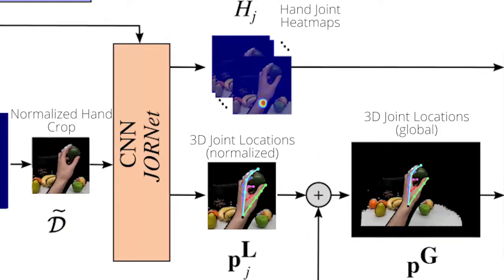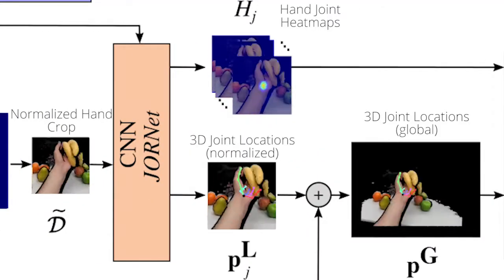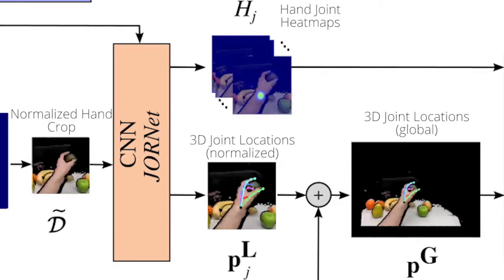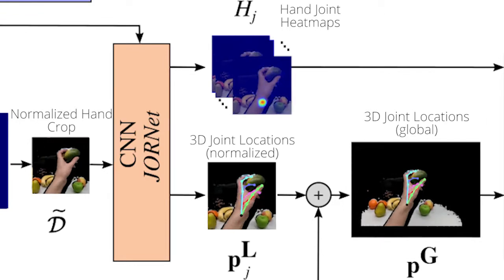In the 3D joint location regression step, the normalized hand crop image is fed into a joint regression network or JullNet to obtain 2D position heatmaps and 3D joint locations for 21 joints in the hand.